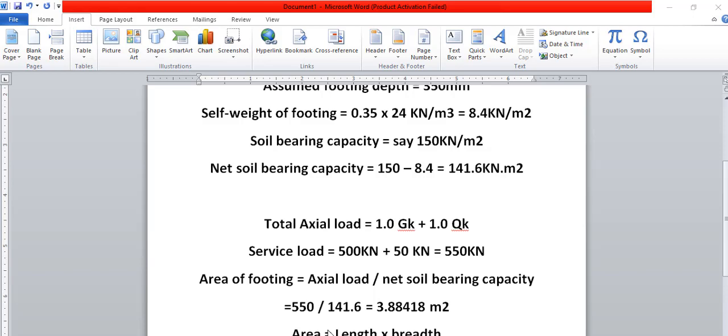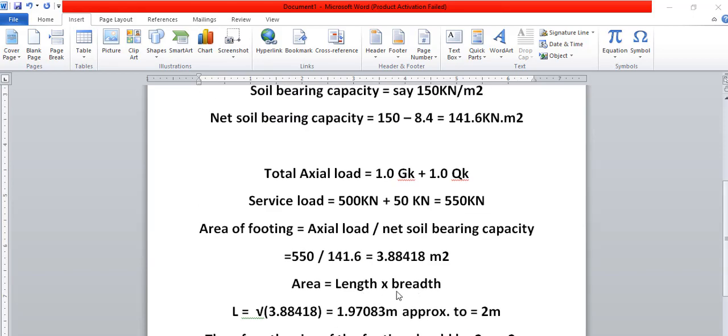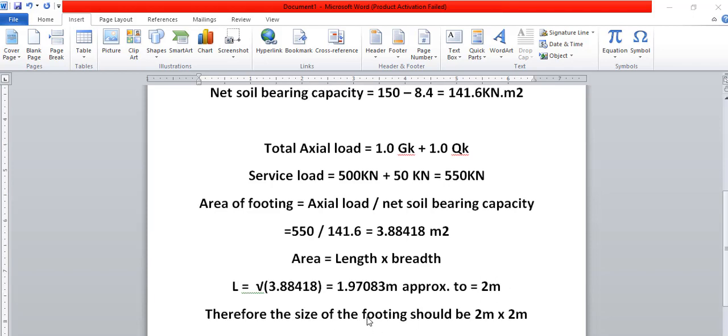Now area becomes length times breadth, but since it's a square, length times length or breadth times breadth. So what we do to get the length is we find the square root of the area. If we get the square root, we are having √(3.88418) = 1.97083 meters, then we need to approximate to 2 meters. Therefore, the size of the footing should be 2m × 2m.